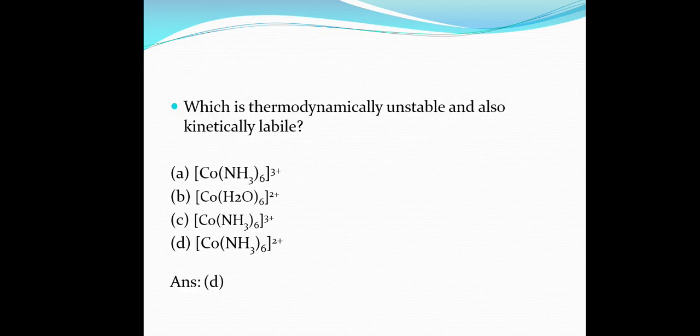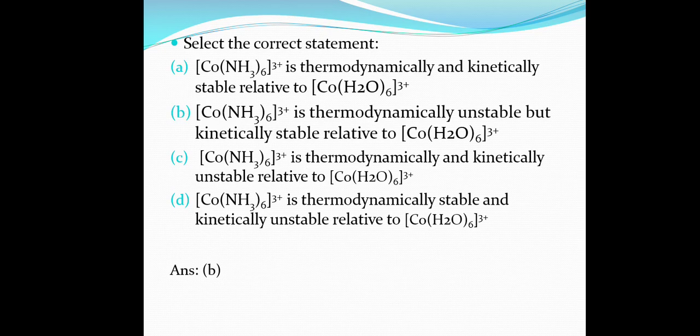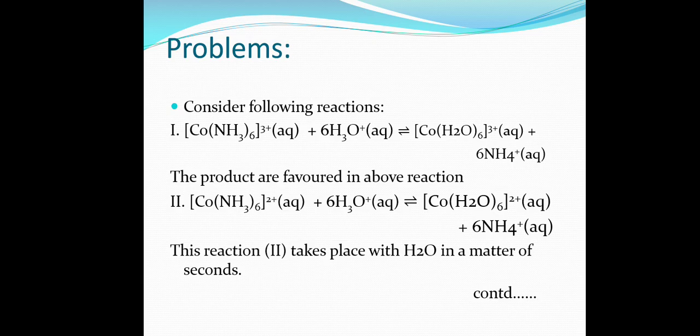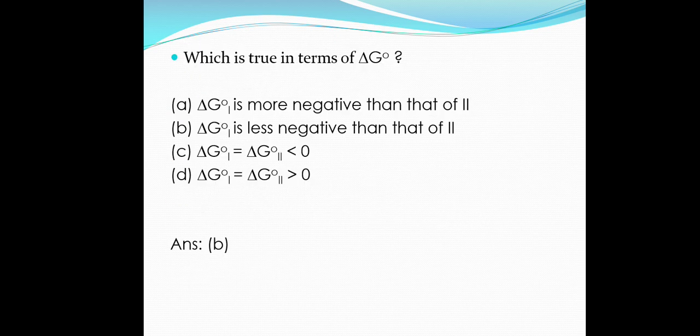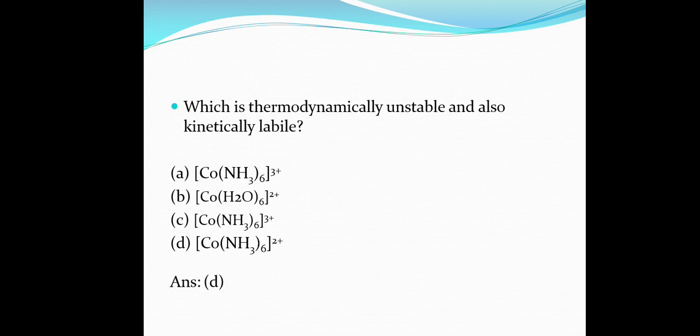The third sub-question asks which complex is both thermodynamically unstable and kinetically labile. The answer is option D: Co(NH₃)₆²⁺. Looking back at reaction 2, Co(NH₃)₆²⁺ is kinetically labile — it reacts in seconds — and it is also thermodynamically unstable. So Co(NH₃)₆²⁺ satisfies both conditions: thermodynamically unstable and kinetically labile.